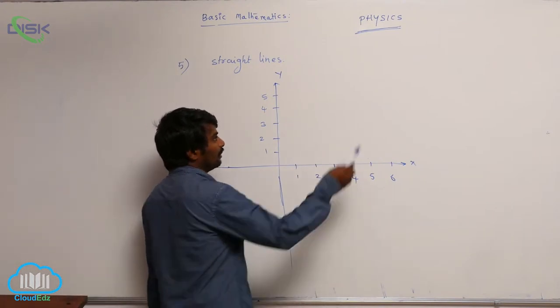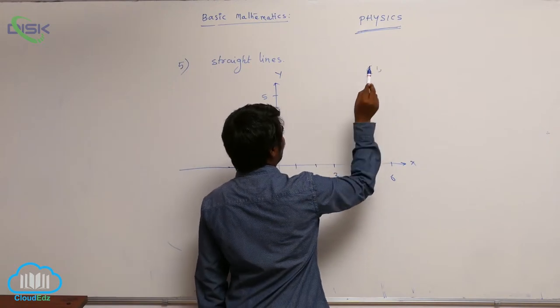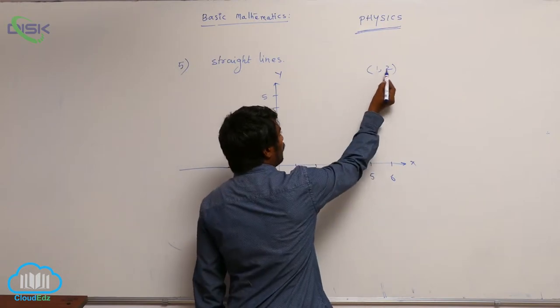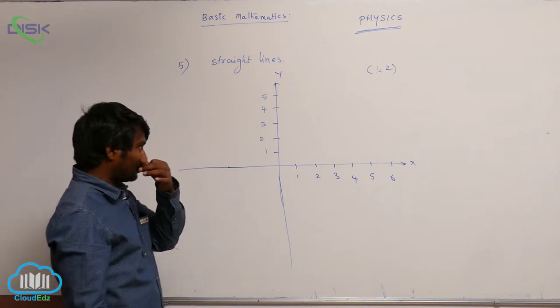Now the point I have to identify: 1, 2. 1 is x-value, 2 is y-value. x-coordinate, y-coordinate.